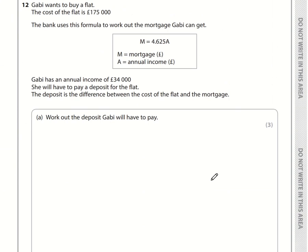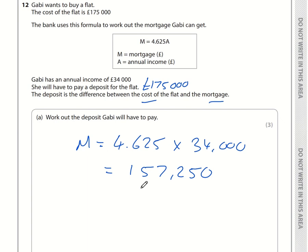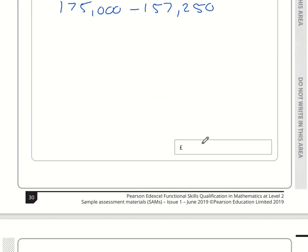Question 12. We need to work out the deposit that Gabby will have to pay. The deposit is the difference between the cost and the mortgage. The cost of the flat is £175,000. The mortgage is 4.625 times A, where A is the annual income of £34,000. 4.625 times £34,000 is £157,250. The deposit is £175,000 minus £157,250, which is £17,750.